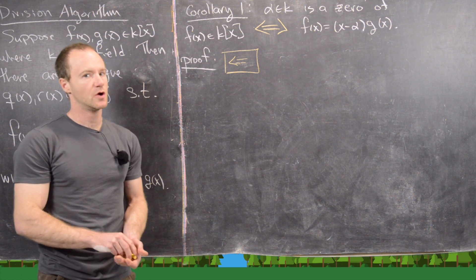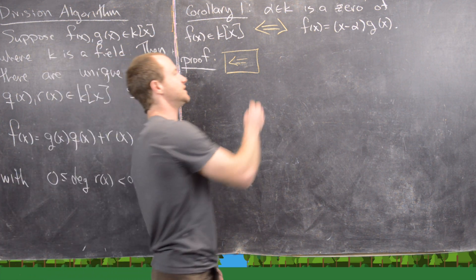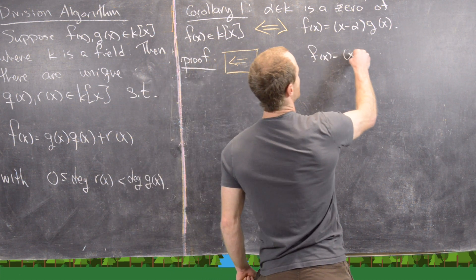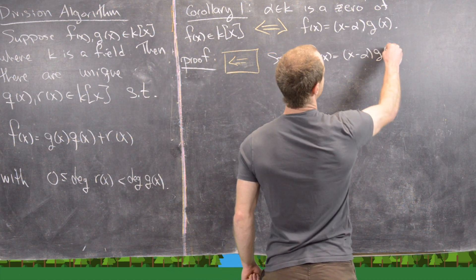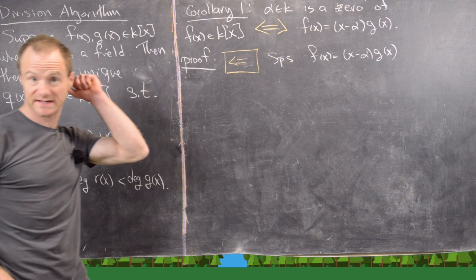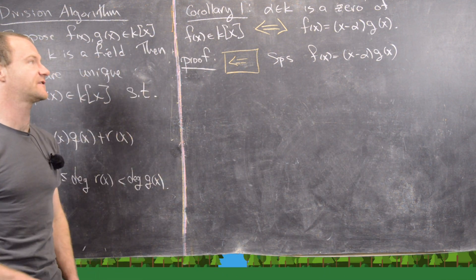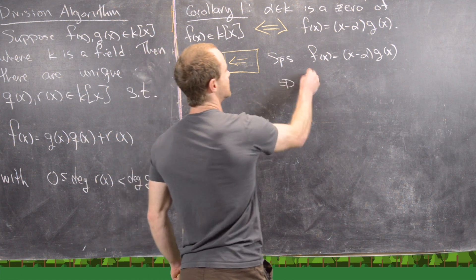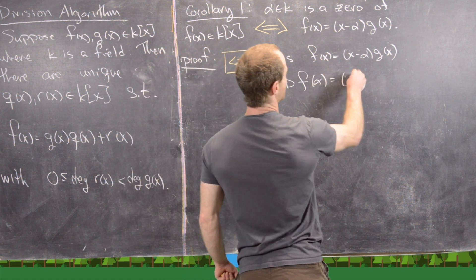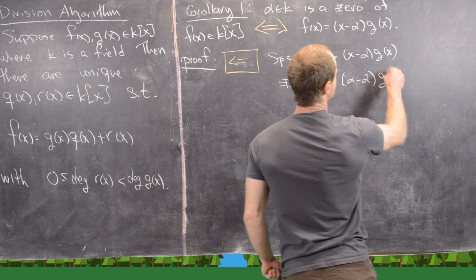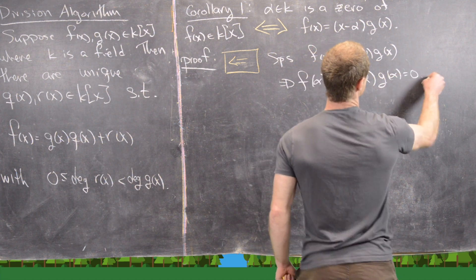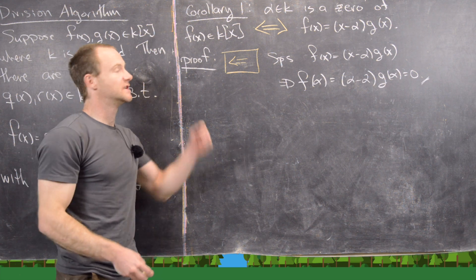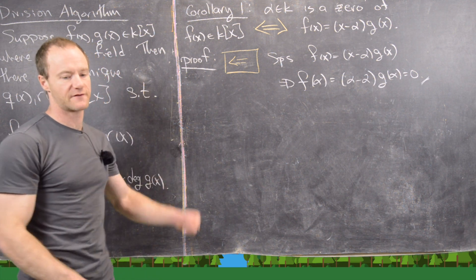For the reverse direction, there's not much to do. Suppose f(x) = (x − α)·g(x). Then evaluating at α gives f(α) = (α − α)·g(α) = 0, which is completely clear. That finishes the proof.